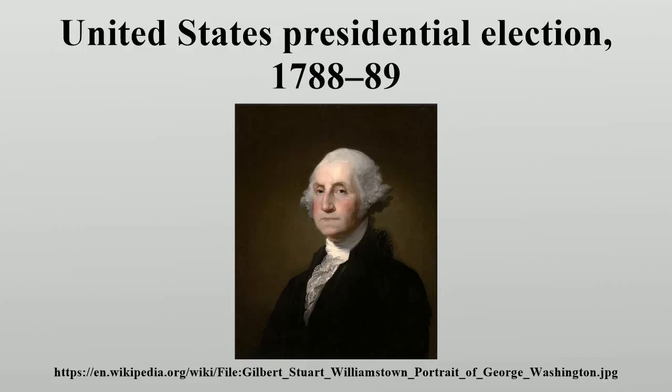Because Washington was from Virginia, many assumed that a vice president would be chosen from one of the northern states to ease sectional tensions. In an August 1788 letter, U.S. Minister to France Thomas Jefferson wrote that he considered John Adams and John Hancock to be the top contenders, with John Jay, James Madison, and John Rutledge as other possible candidates. Electors were selected by the individual states, and each cast one vote for Washington. The electors used their second vote to cast a scattering of votes, many voting for someone besides Adams.